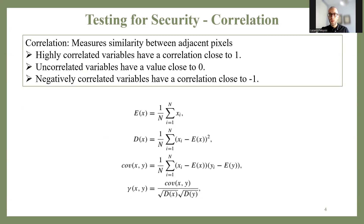So what is correlation? It can be considered for any type of time series in general — it's a statistical measure that tells us how similar two different time series are. For an image, it can tell us how similar two adjacent pixels are, for example, in adjacent rows or adjacent columns.